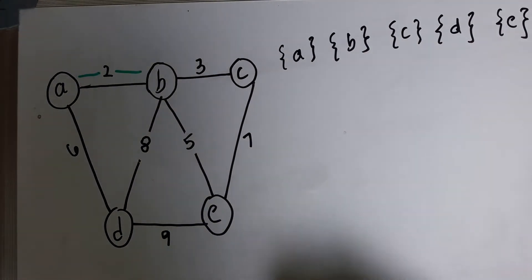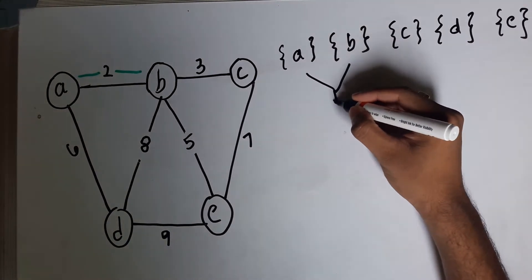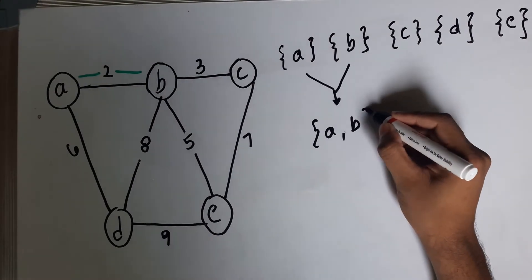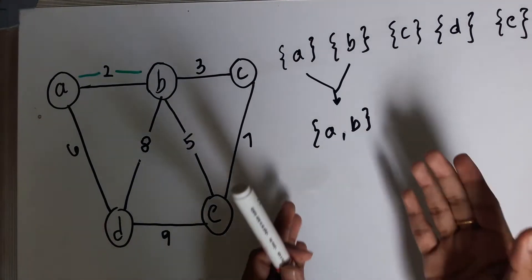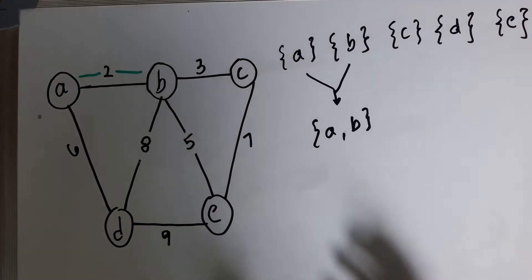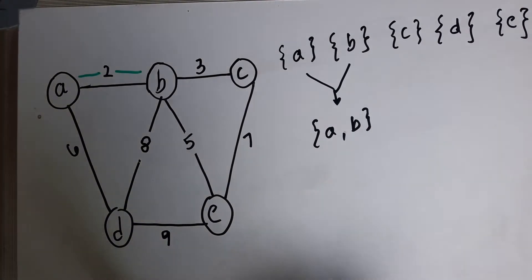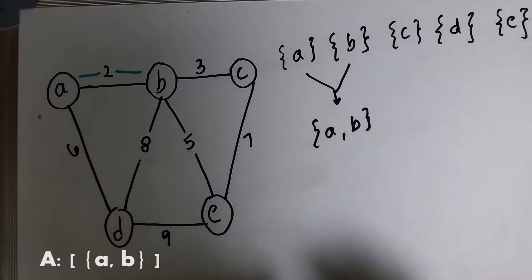We obviously know that A and B do not belong to the same set, so we merge these two sets to form a single set {A, B}. The representative of this merged set will be the greater element, which is B. We then add this edge to our global set A.